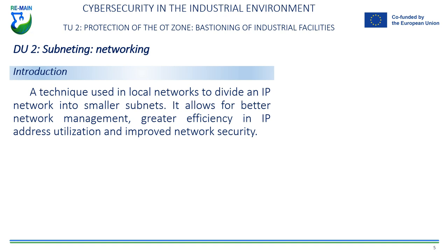The company could divide the IP network into two subnets, assigning the network address 172.16.0.0/24 to the sales department and 172.16.1.0/24 to the engineering department. By using the subnetting technique, each subnet has its own range of IP addresses available for devices connecting to it.